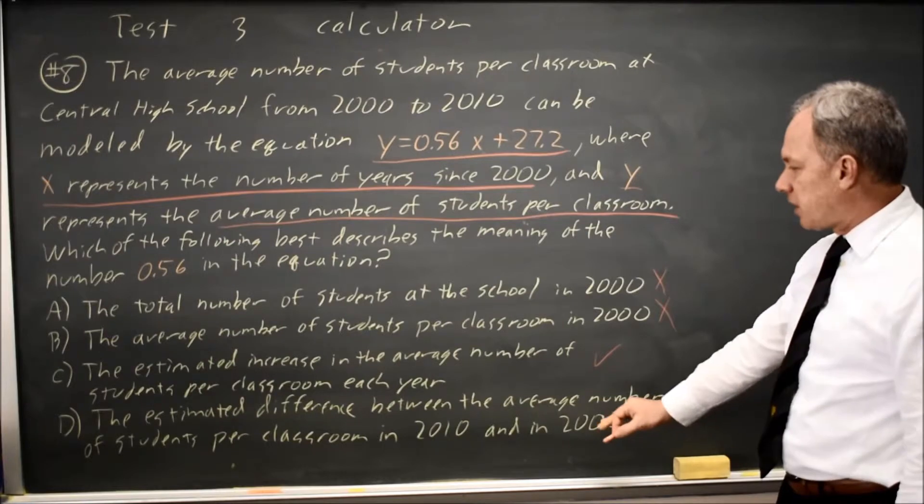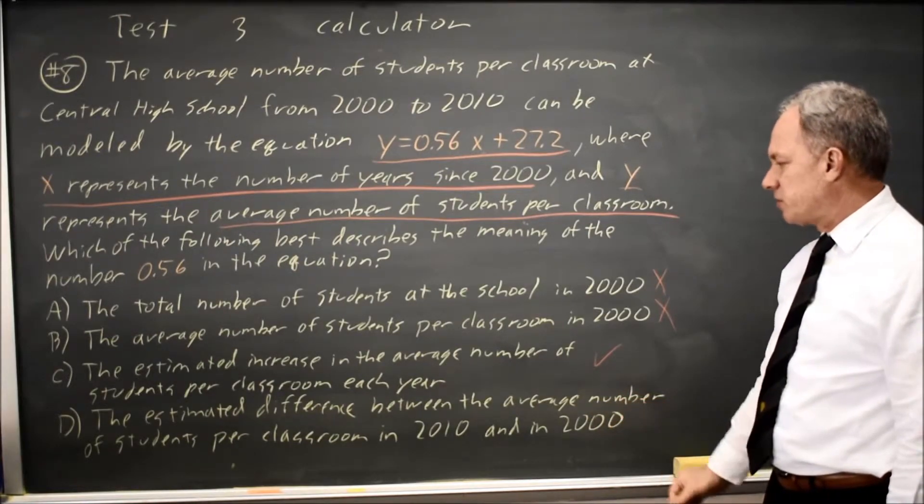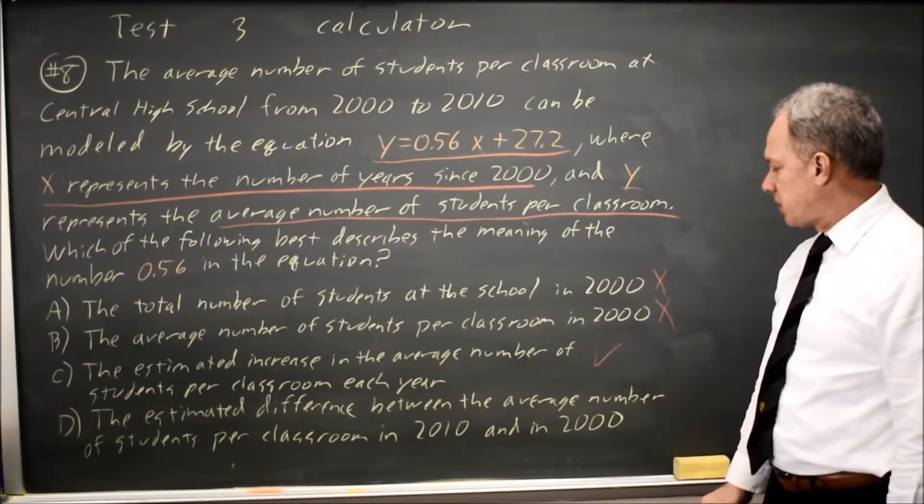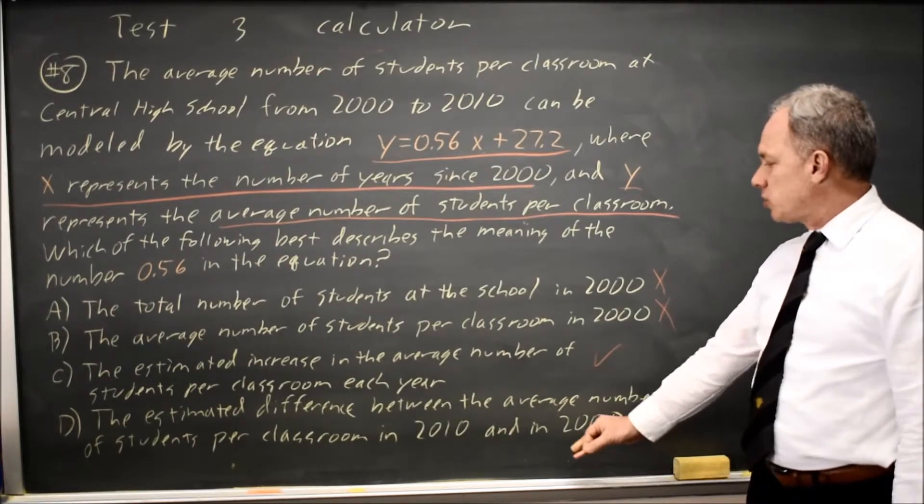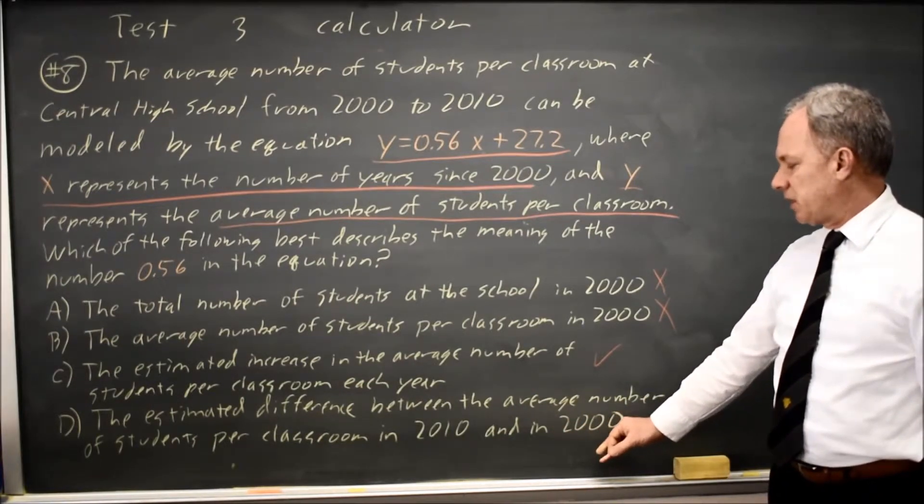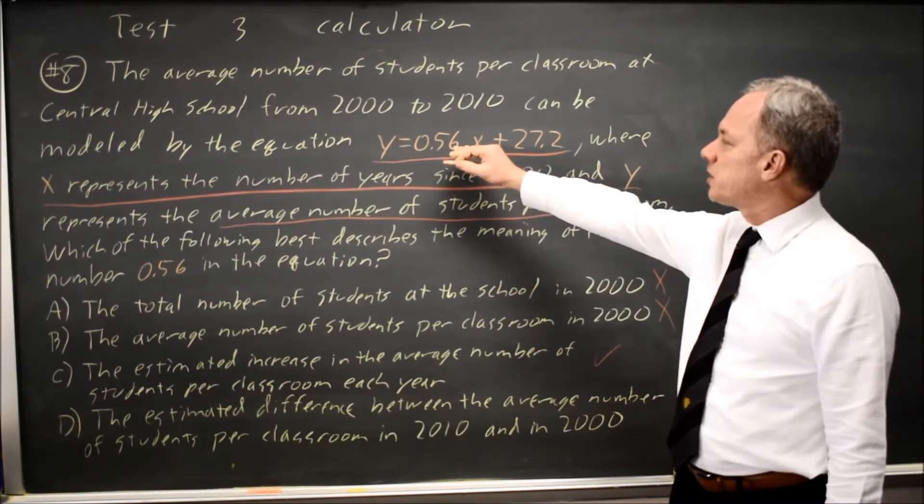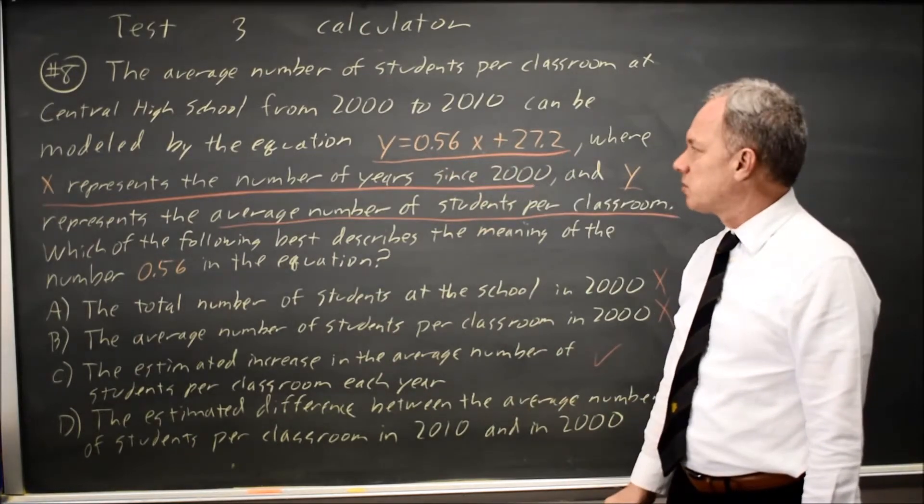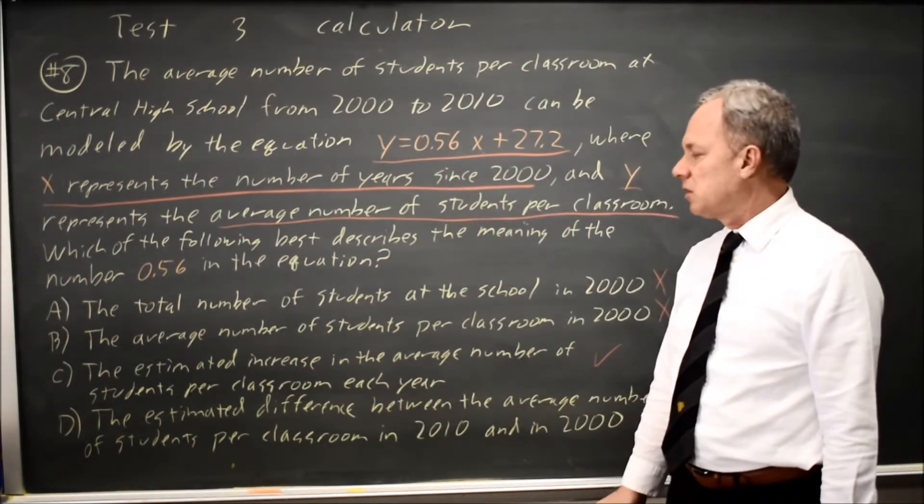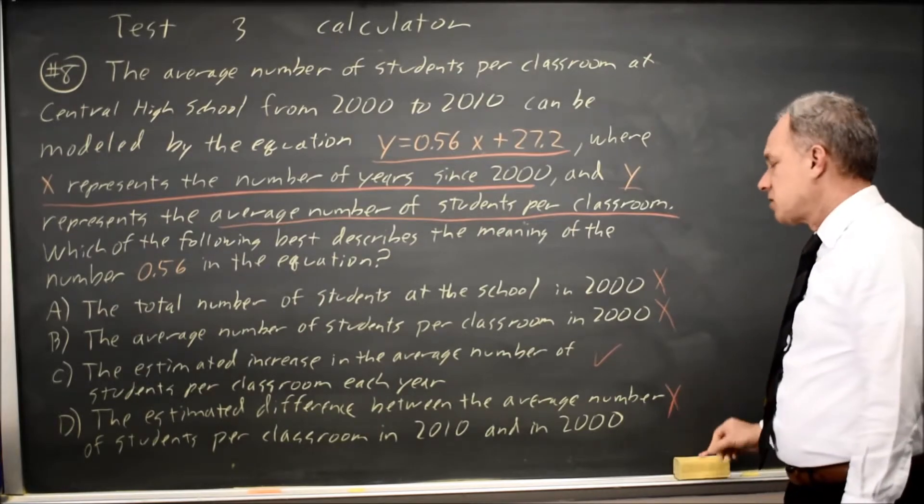Let's look at D. D is the estimated difference between the average number of students per classroom in 2010 and in 2000. 2010 is x equals 10, 2000 is x equals 0, so y would go up by 10 times as much. y goes up by 5.6 over those 10 years. So that's not correct.